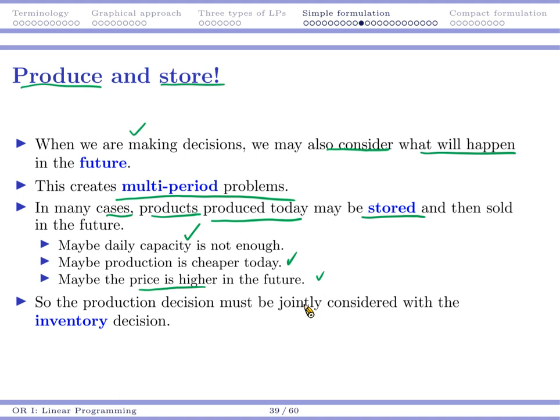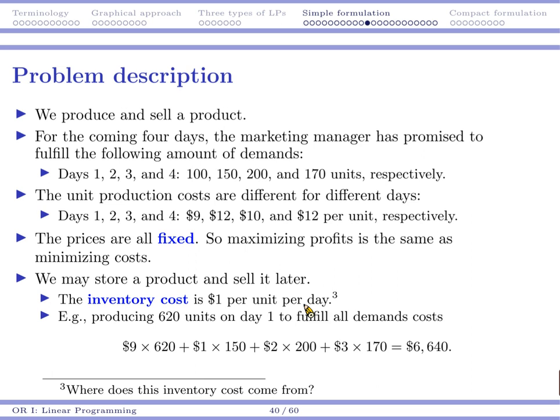So now let's consider an example where the production decision is jointly considered with inventory decisions. We now again produce and sell a product. For the coming four days, the marketing manager has promised the customers to fulfill the following amount of demands. For day one, two, three, and four, you need to produce and sell 100 units, 150 units, 200 units, and 170 units respectively.